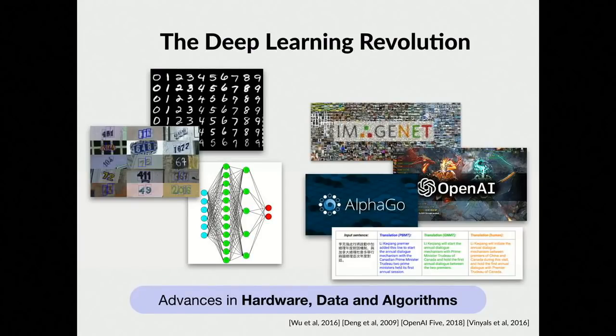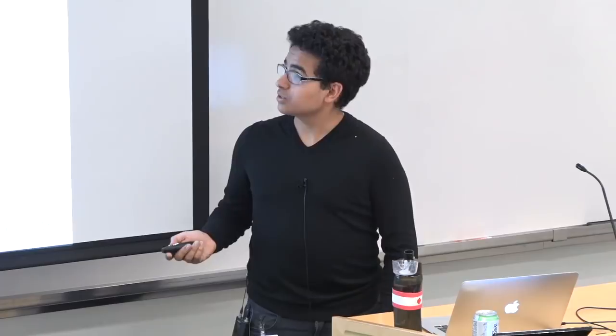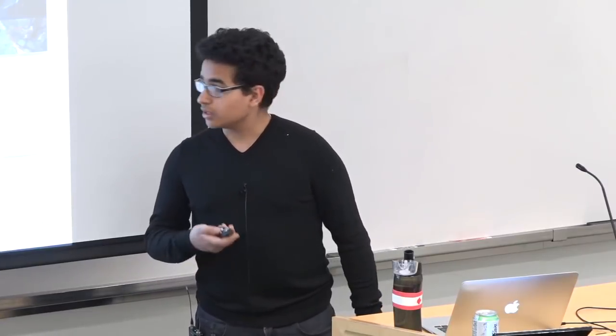I'm going to start by talking about the deep learning revolution. I don't mean how deep learning is going to revolutionize all our lives — what I want to talk about more is the revolution within deep learning. Less than 10 years ago, we were super happy building digit classifiers with two-layer neural networks. Now we have agents that play Go, recognize ImageNet, and all these super impressive applications. Due to advances in hardware, data, and algorithms, deep learning has come a massive way in a really short amount of time.